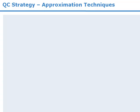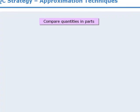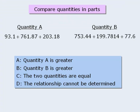Now when it comes to using approximation to solve quantitative comparison questions, another useful strategy is to compare the quantities in parts. Here's an example of how this strategy works. As you can imagine, we do not want to add all of these values together. Now we could try using approximation here and see if that works. However, we can solve this question even faster by comparing the two quantities in parts.